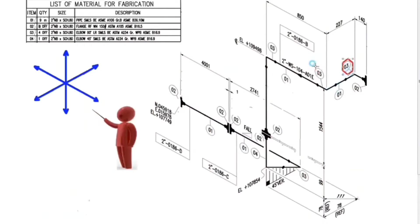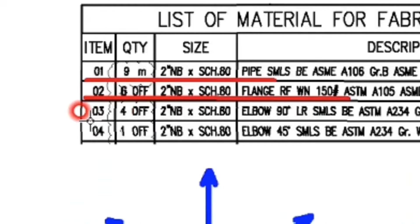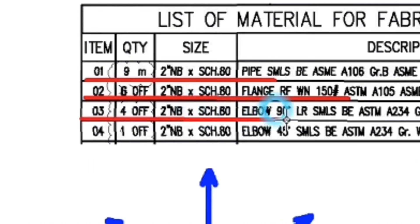These are details number 3. Let's look at the material list. Detail number 3: 4 pieces, 2 inch, schedule 80, elbow, 90 degree, long radius.